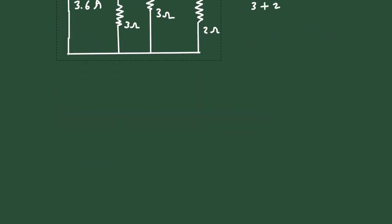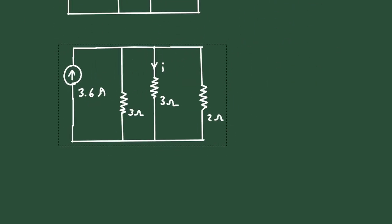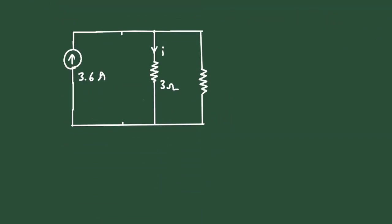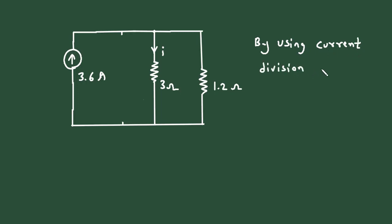Let's copy this circuit. We will erase this resistor here, and this resistance value will now be 1.2 Ohm. Now we have to find current I using the current division rule. I is equal to 3.6 multiplied by the opposite branch resistance. The parallel branch to this 3 Ohm is 1.2 Ohm, so it is 1.2 divided by 1.2 plus 3.